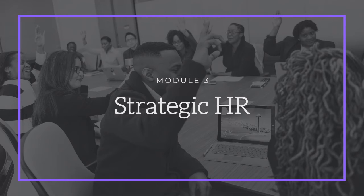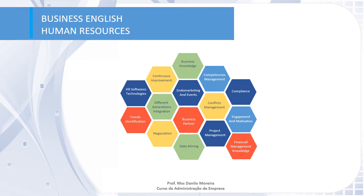In the third module we discuss strategic HR. Strategic HR deals with operations that add more value to the business beyond just operational activities. For example, data mining is a modern HR activity where HR software and technologies are used to identify trends, better manage performance evaluation, compensation, benefits, and payroll, avoid risks, improve quality of life for employees, and be more competitive in the market.